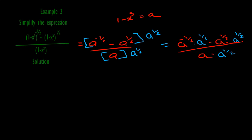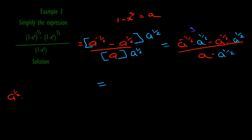Using the laws of indices, the first term in the numerator: a raised to negative a half times a raised to power half — same base with multiplication sign, add the powers — negative a half plus a half gives a raised to power zero, which is one. The second term in the numerator: a raised to power half times a raised to power half — add the powers — a half plus a half gives one, so we get a raised to power one, which is just a.